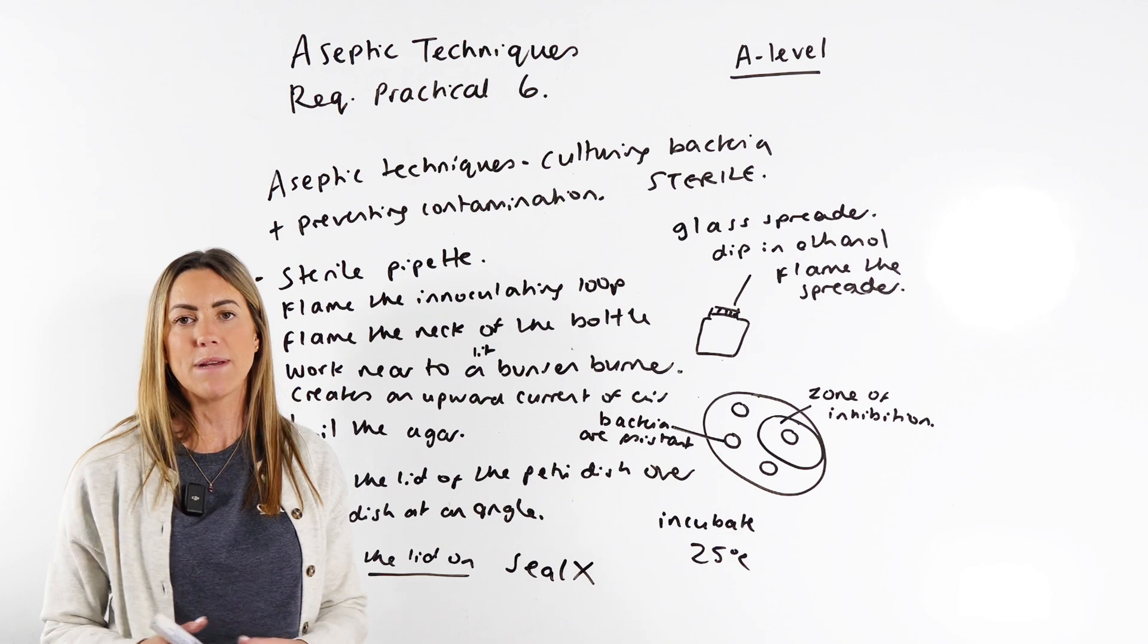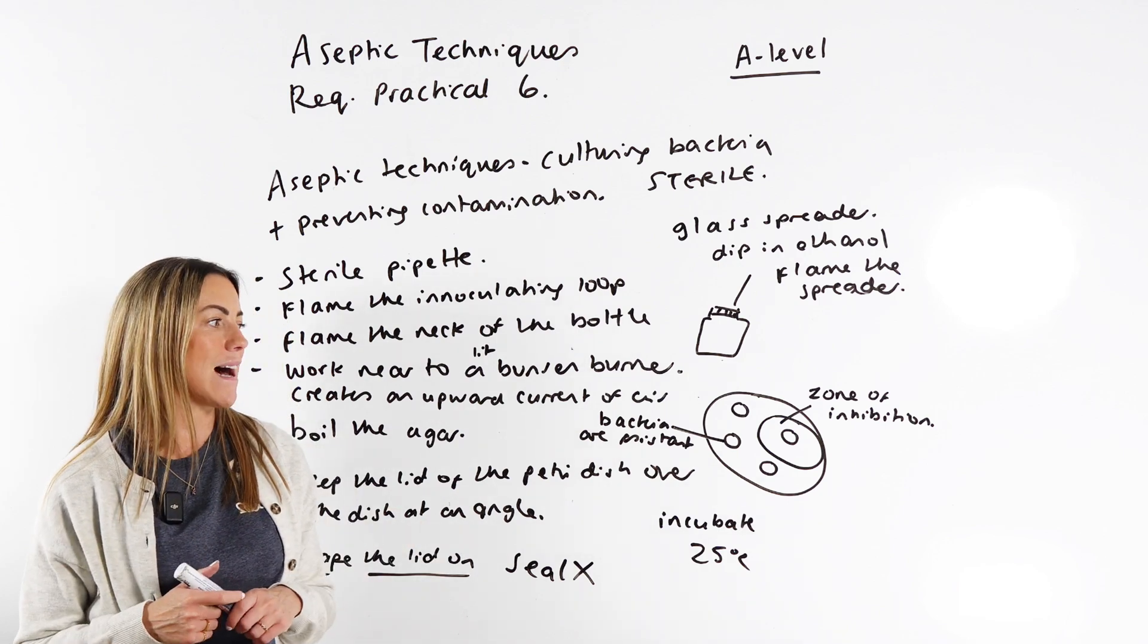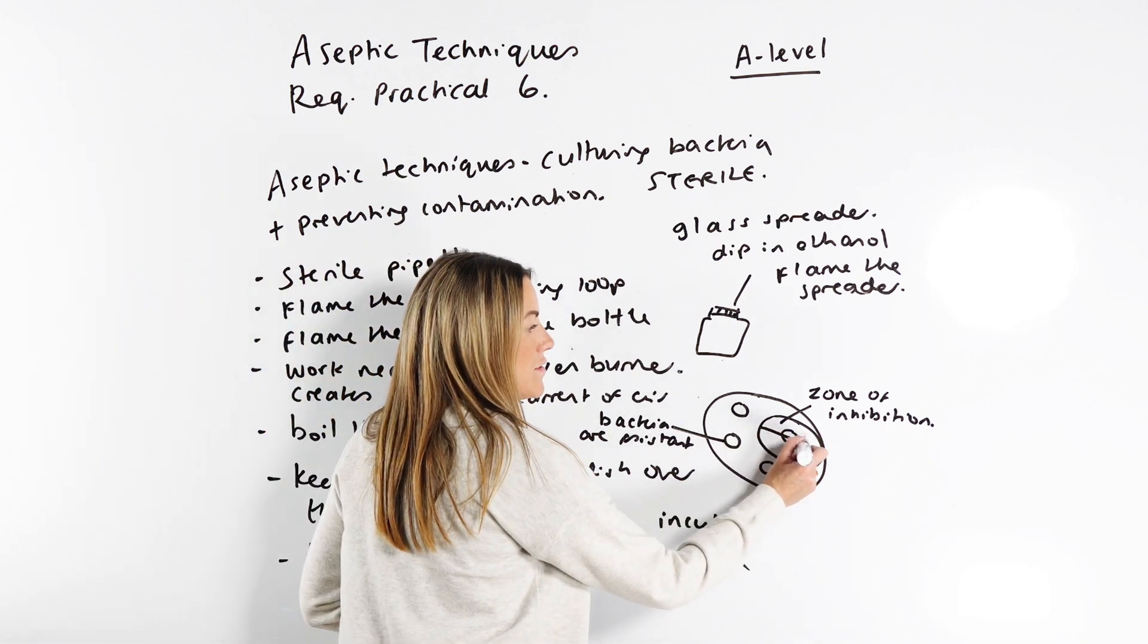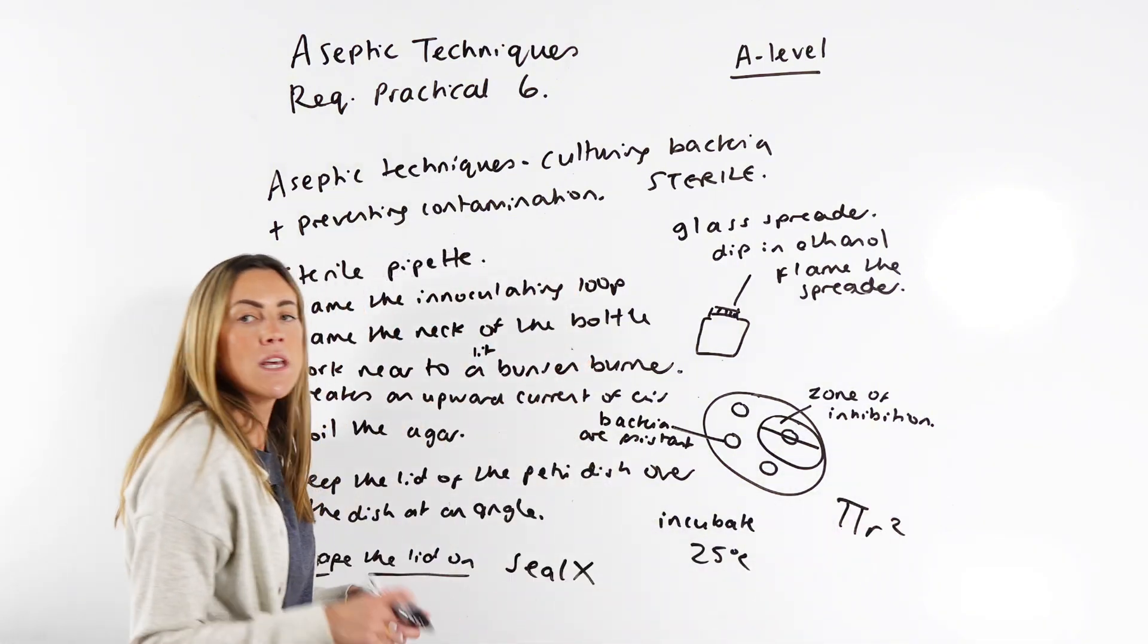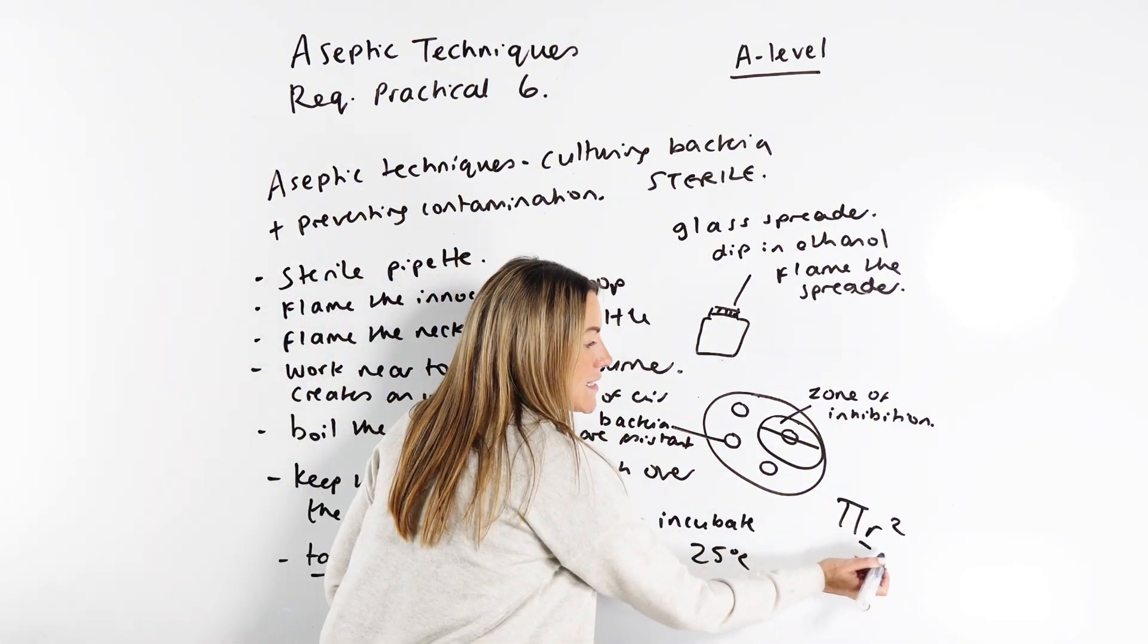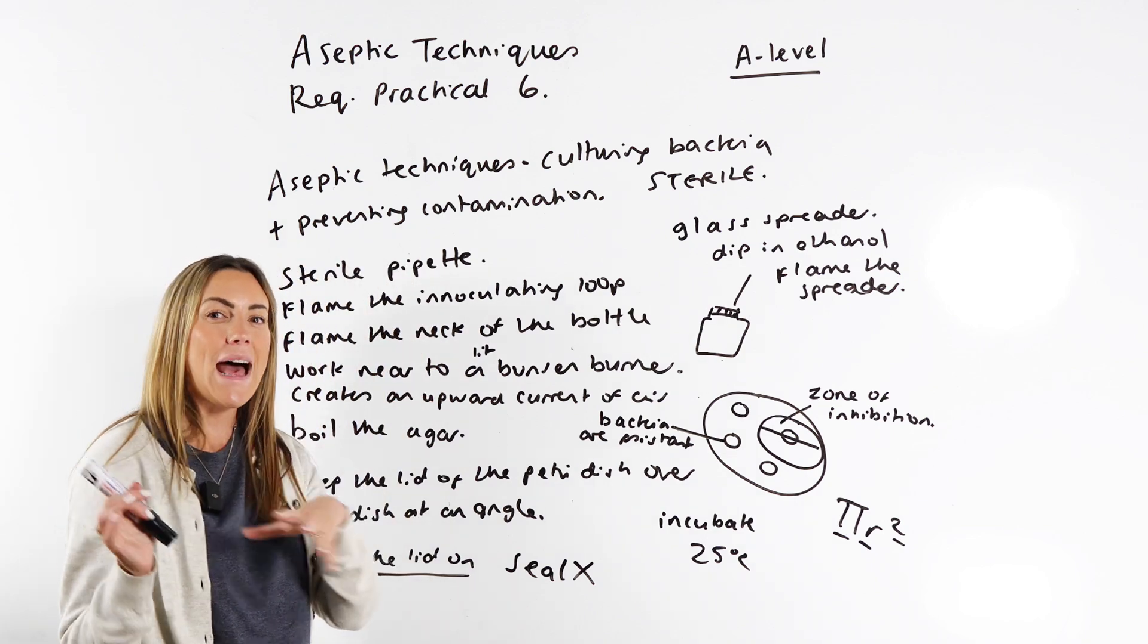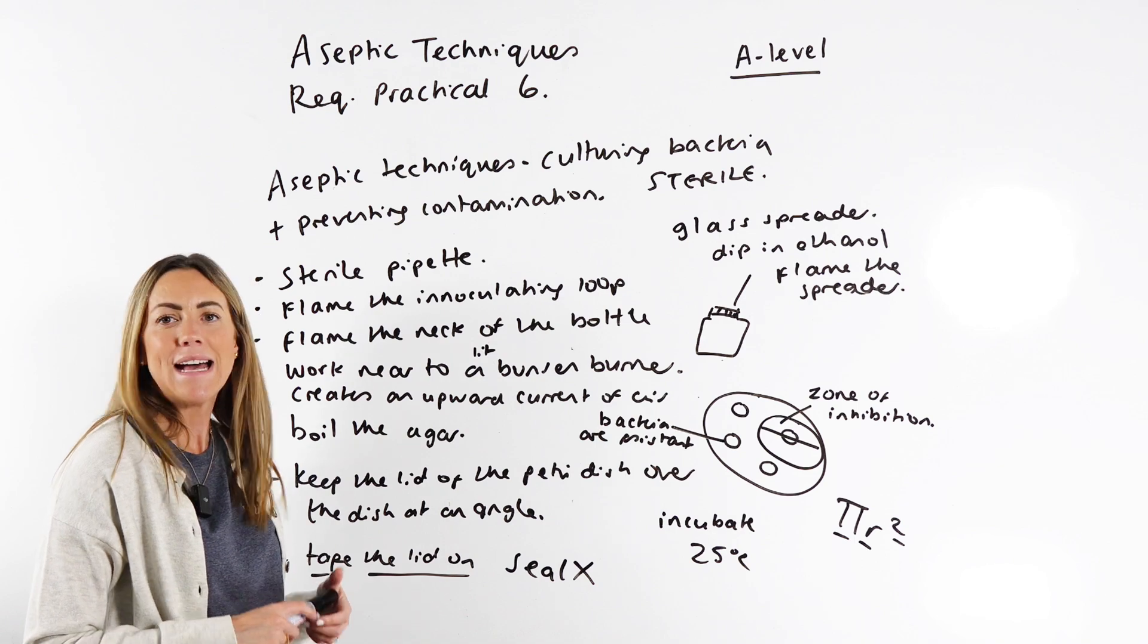Now, obviously, if you're comparing zones of inhibition, it's a circular zone. So you can compare them by calculating the area of that circle. So you'd use the formula pi r squared, measure the diameter, half it to get the radius, square it, multiply it by pi. And then you can compare the areas to see which was really the most effective antibiotic.